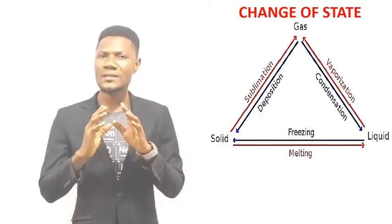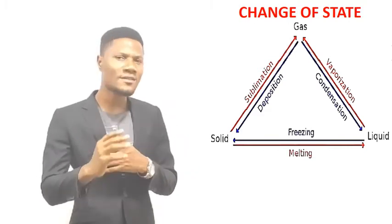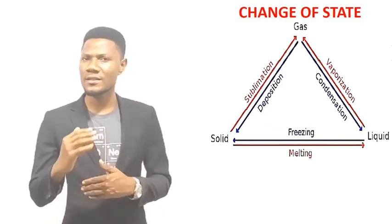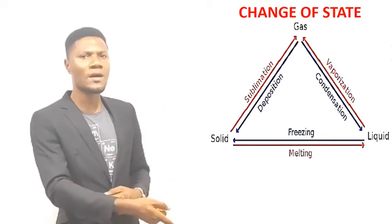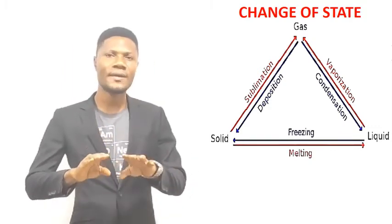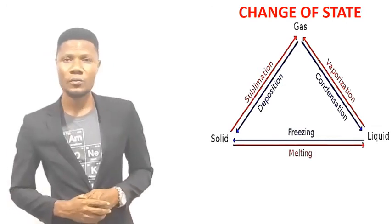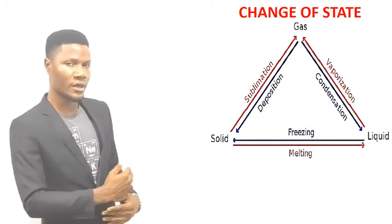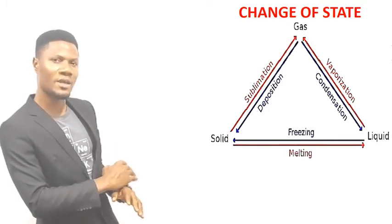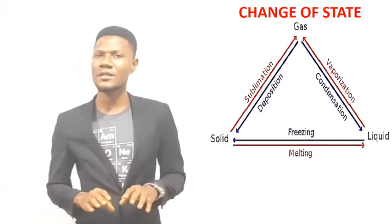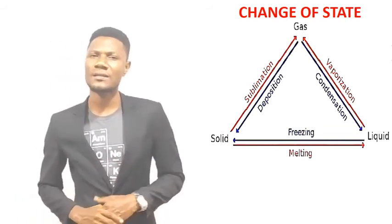When a solid turns to gas without passing through the liquid state, the process is called sublimation. And when gas turns back to solid without passing through the liquid state, the process is called deposition. You can use a triangle to explain it: with solid, liquid, and gas at each corner. From solid to liquid is melting; liquid back to solid is freezing. From solid to gas is sublimation; gas back to solid is deposition. From liquid to gas is vaporization; and from gas back to liquid is condensation.